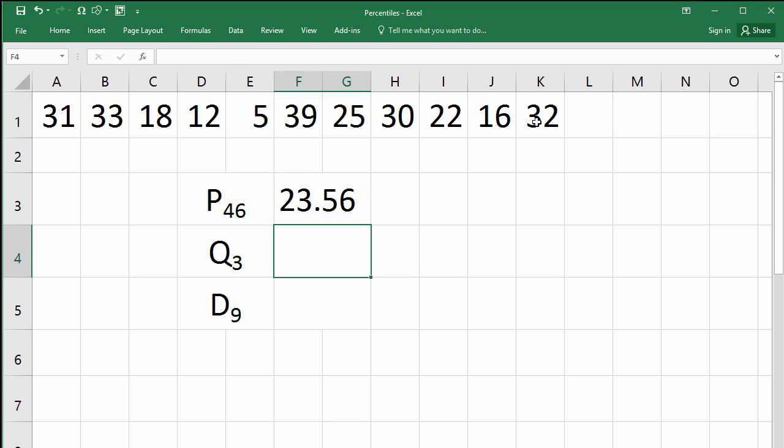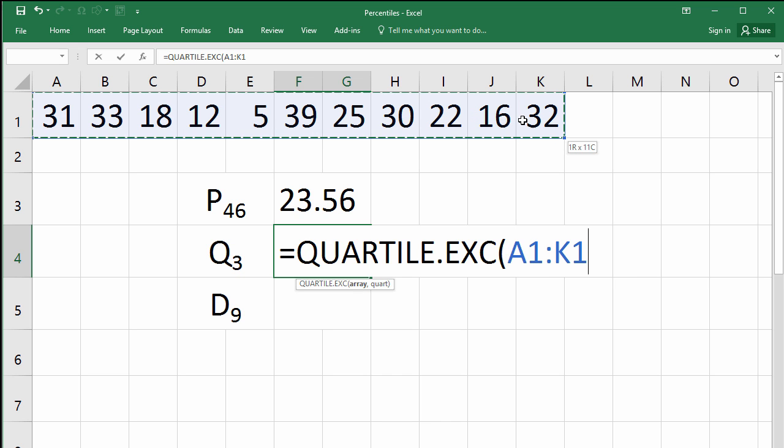For the third quartile, which is the same as the 75th percentile, I can use percentile or I can use quartile as well. So equal quartile, double click to select quartile exclusive, select the data, comma, and enter.